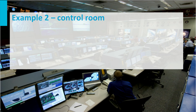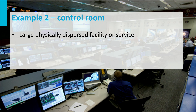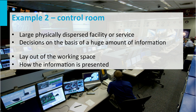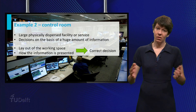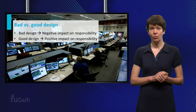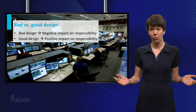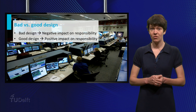The second example is the control room — the central space where a large, physically dispersed facility or service can be monitored and controlled. These rooms are often equipped with multiple monitors and screens, and people working in a control room often have to make quick decisions on the basis of a huge amount of information. That means that the layout of these rooms and the way the information is presented determines to what extent people are indeed able to make the correct decisions. We could say that a badly designed control room may hinder people from taking their responsibility, but vice versa, a well-designed control room may enhance a person's ability to carry out his or her responsibility.